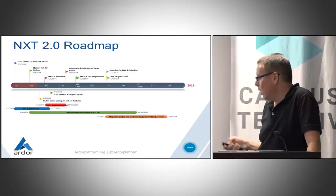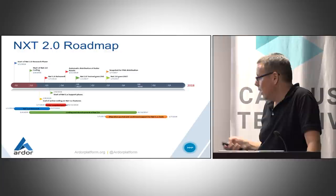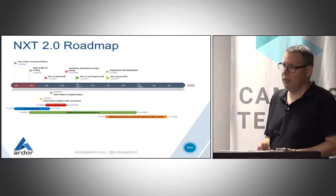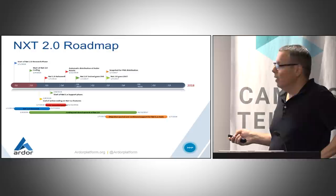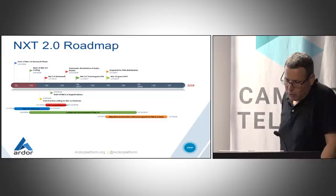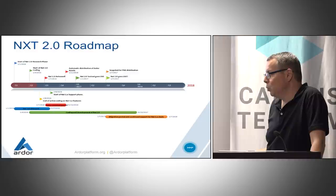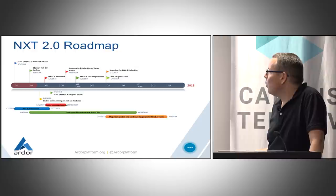Another important question is what's going to happen to the NXT 1.x blockchain itself. The NXT blockchain will continue to run in parallel to this new design. As long as there are forgers that maintain the network, it will continue to operate. We don't think we will put a lot of effort into the NXT 1.x blockchain, especially not once 2.0 is released, but it's still going to work.